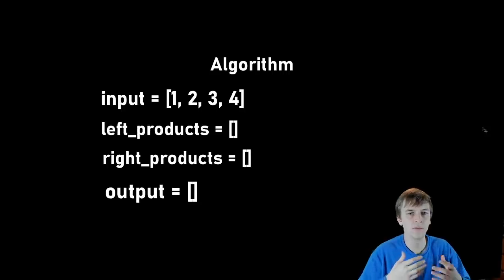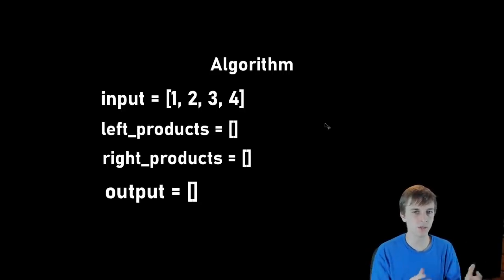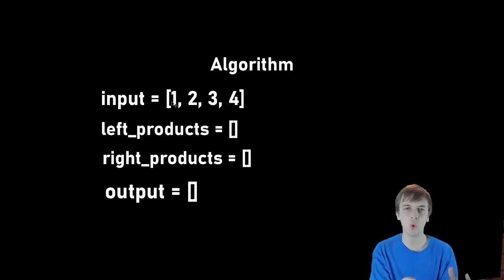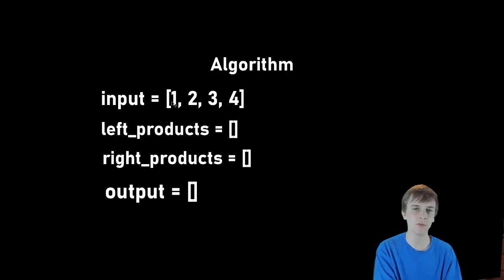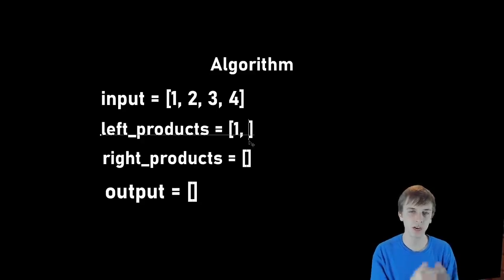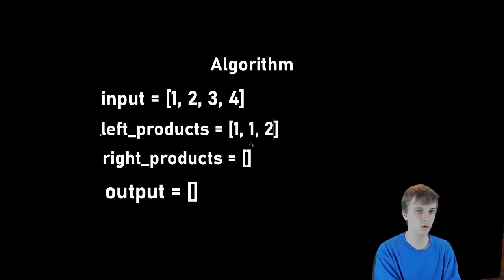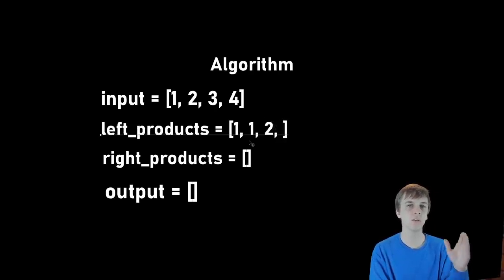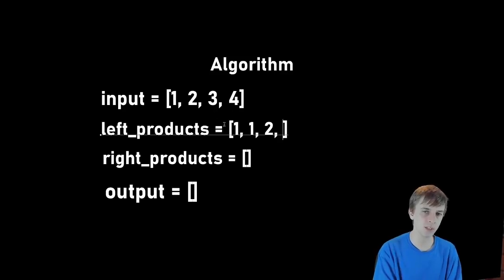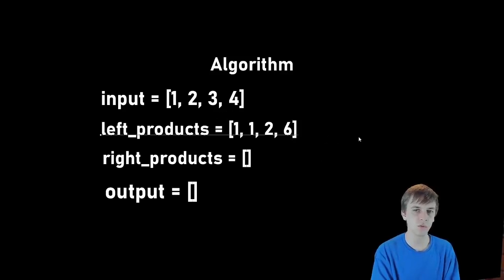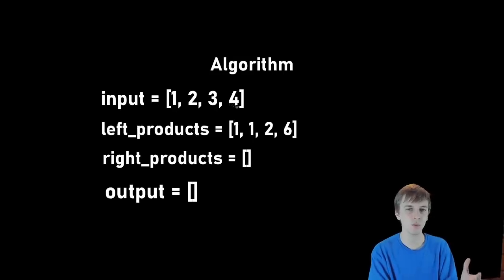Let's fill up our left products array first. We loop through our array and for each element we take the product of everything to the left of it. The first element has nothing to the left, so the product is just one. The second element just has a one to the left, so the product is still one. The third element has a two and a one, so two times one is two. The fourth element has a one, two, and three to the left, so one times two times three is six. This would be our left products array after we loop through.